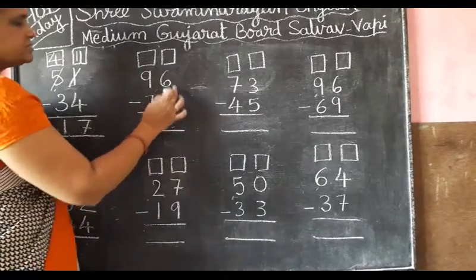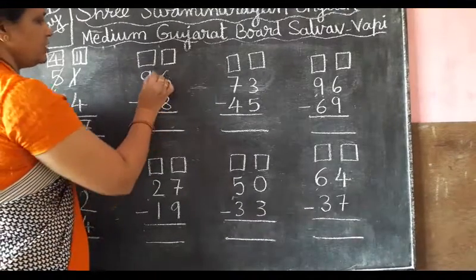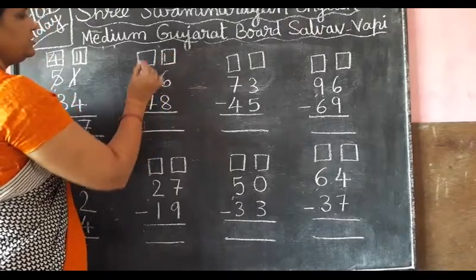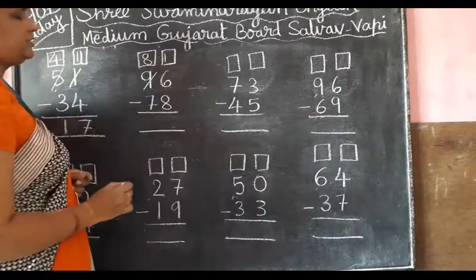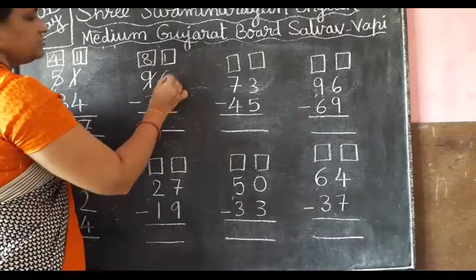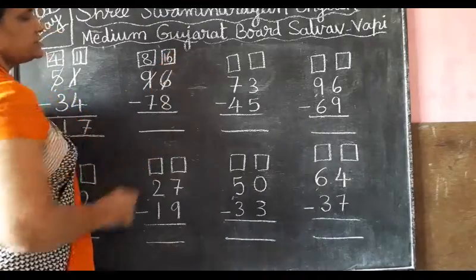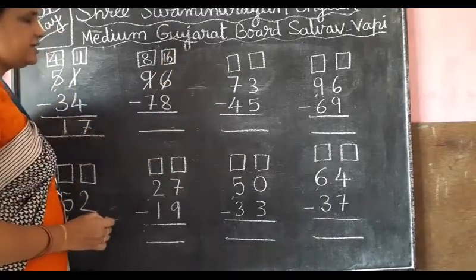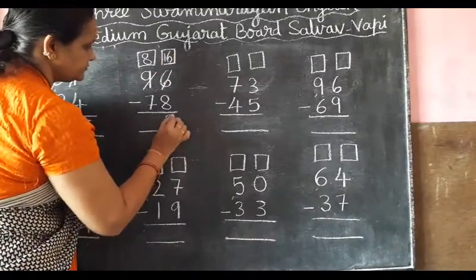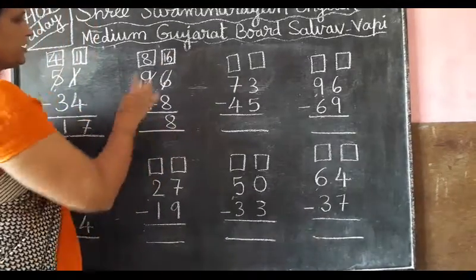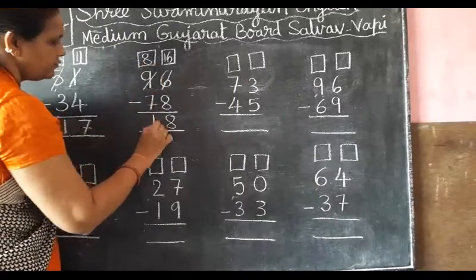Now 6 minus 8 we can't cut, so we have to borrow from 1 here. You have to put 8 here. Which number is this? 6. So 16 minus 8 equals 8. Then 8 minus 7 equals 1.